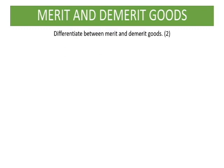Now, depending on the marks that are allocated, you need to decide how many points you are going to list. In this case it's only two marks, meaning just mention one point and you are done. But if it comes with maybe four or eight marks, then you need to list down more points.